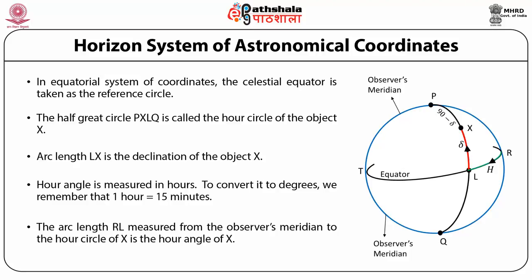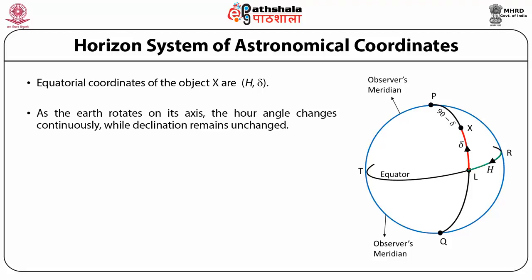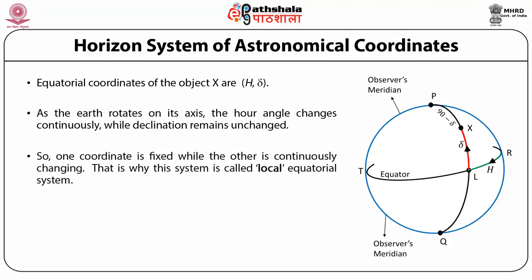One can convert hours to angles because the Earth rotates 360 degrees in 24 hours, so one hour corresponds to 15 degrees. The coordinates of a celestial object X are H (hour angle) and delta (declination). As the Earth rotates on its axis, the hour angle changes continuously while the declination remains the same — one coordinate is fixed while the other continuously changes. That is why this system is called the local equatorial system. This shortcoming is rectified by choosing a reference point that moves at the same speed and in the same direction as the object, which we will see in the universal equatorial system.